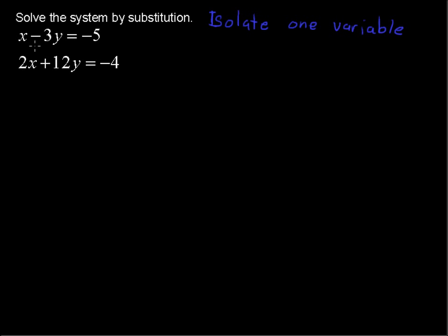To do that, to get x by itself, let's add the opposite of the negative 3y on each side. So plus 3y. And then I'll just put a line over here. And let's rewrite that problem as x equals 3y minus 5.